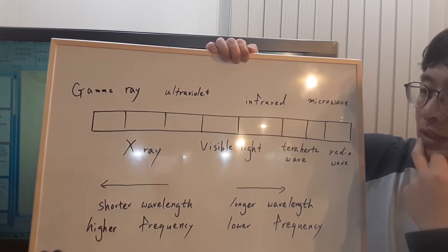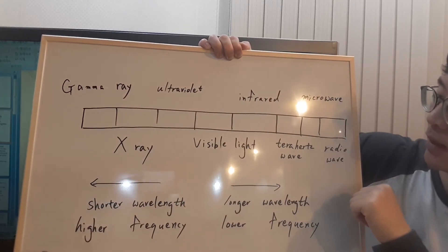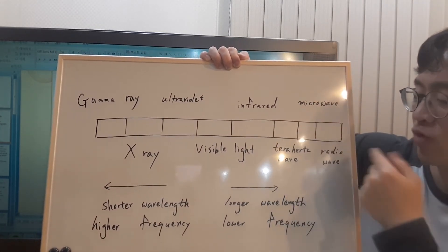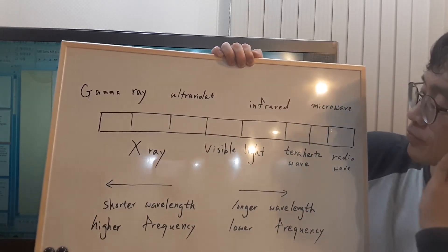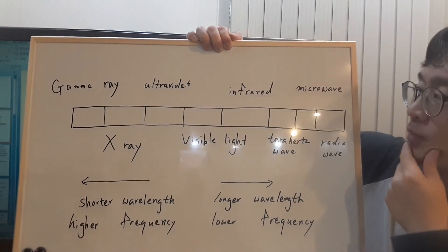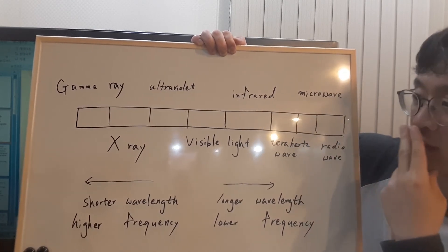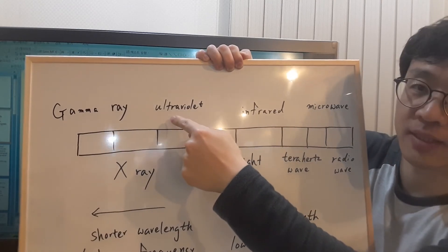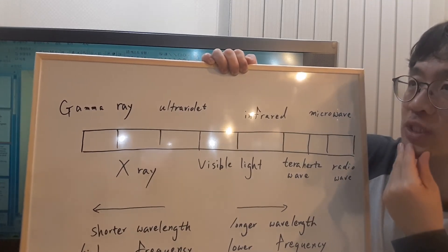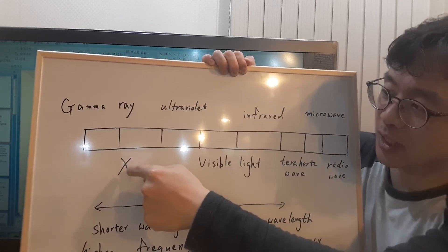And then if you go to longer wavelength, there's terahertz wave and then microwave and then radio wave. Microwave is the wave that you use in a microwave oven. Radio wave is the wave that you use in radio signals. And if you go the other way, it's ultraviolet. This ray is from the sun. If you get exposed to this ray, you will get your skin burned, or you will get dark colors in your skin — it's harmful.